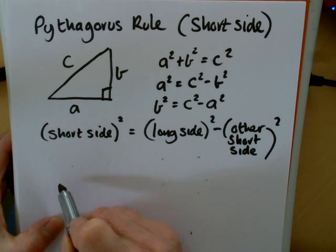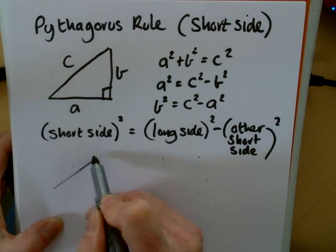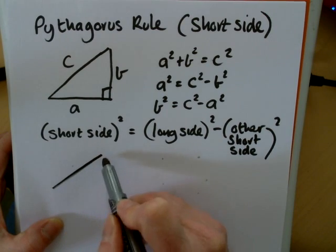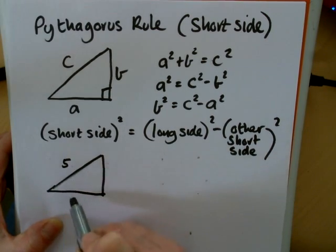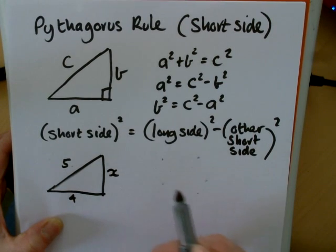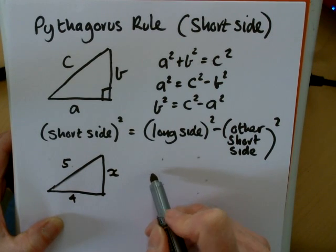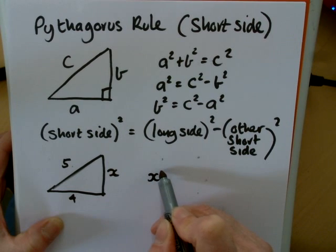So let's go into an example that we can do, really without a calculator to start with, just so we can see the method. So let's suppose we've got 5, 4, and x. What we're basically saying then is that x, a small side squared,